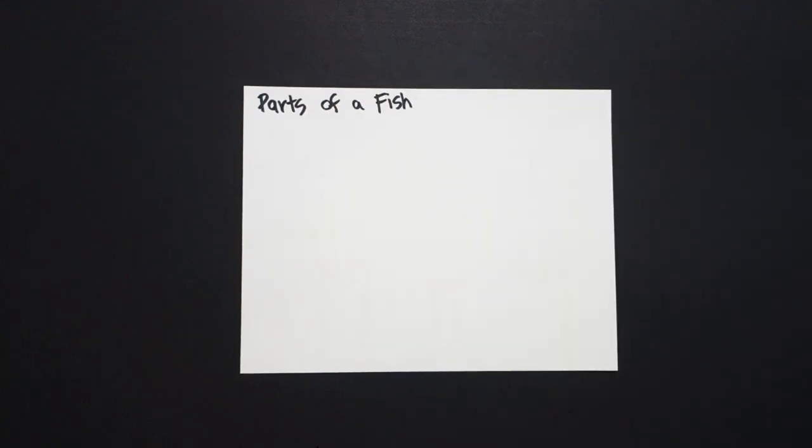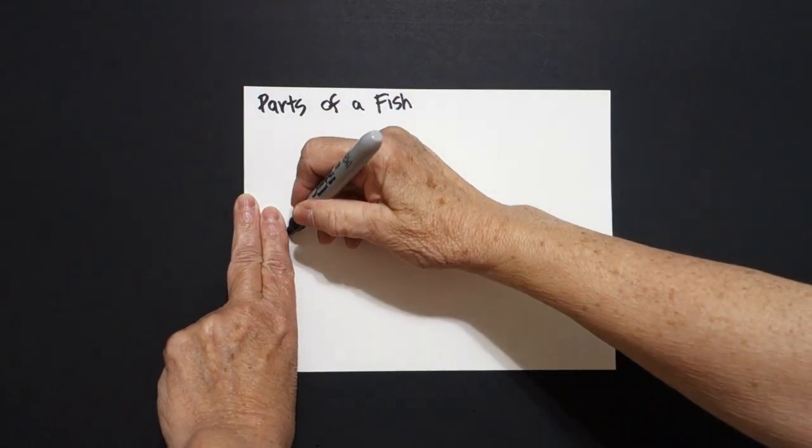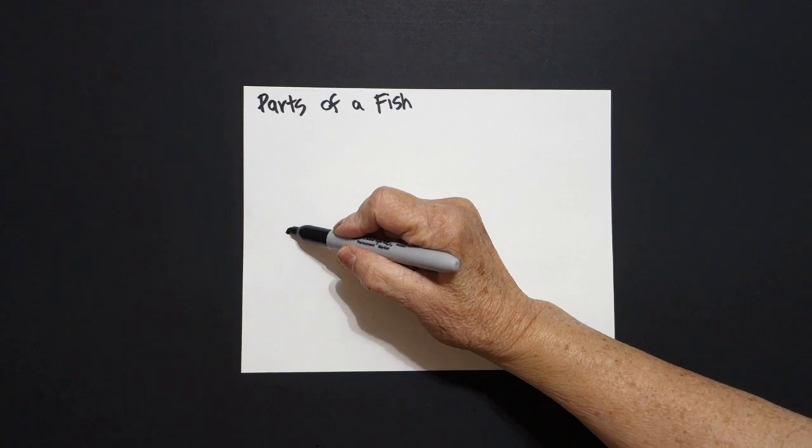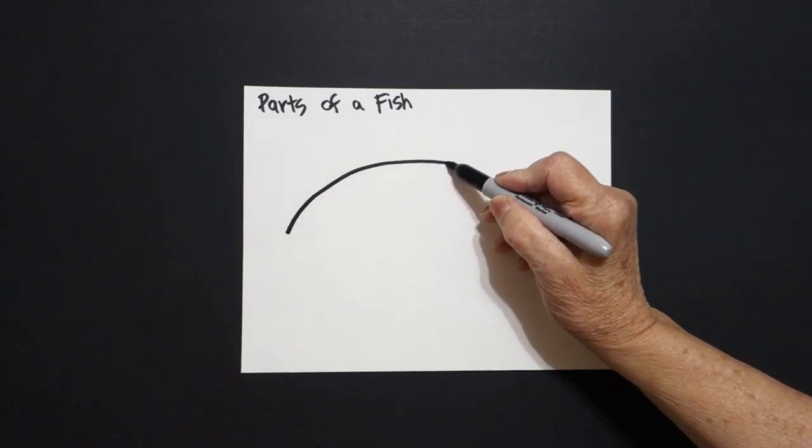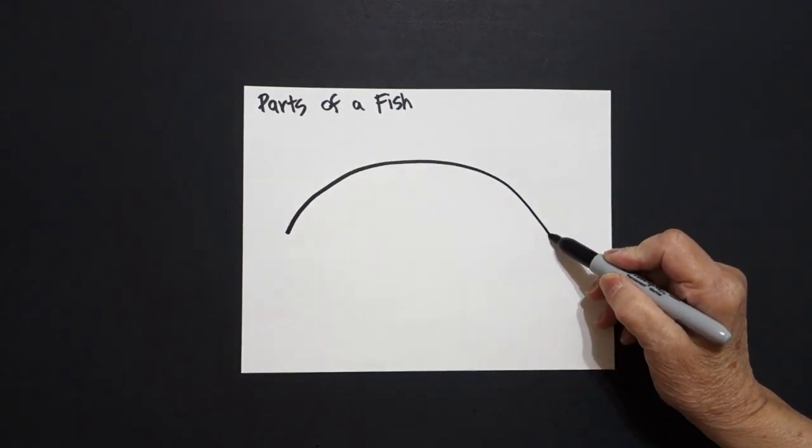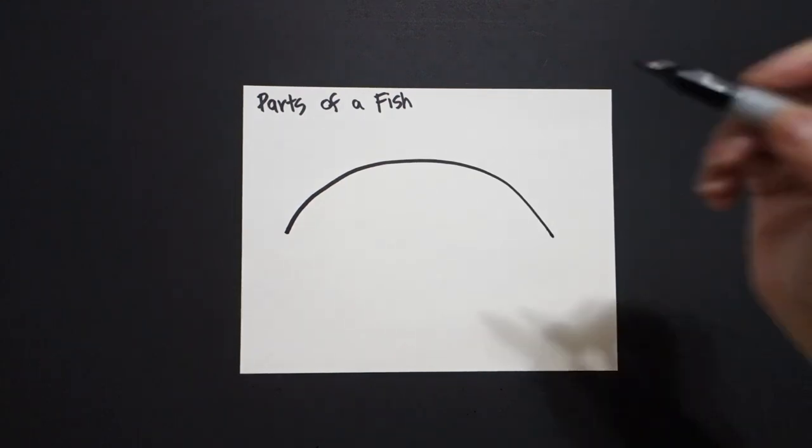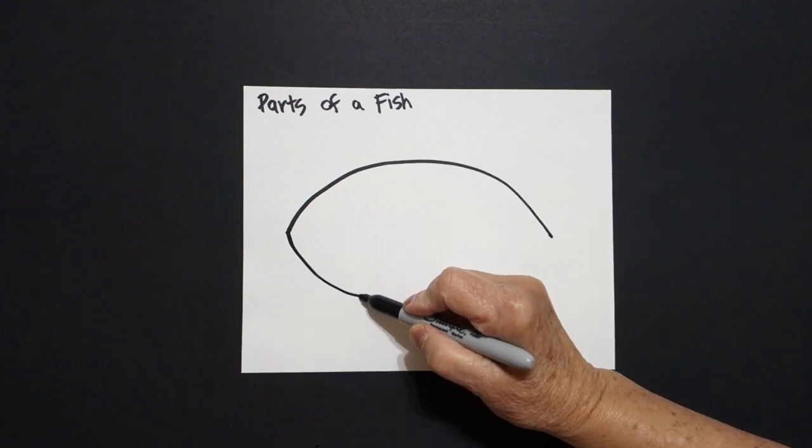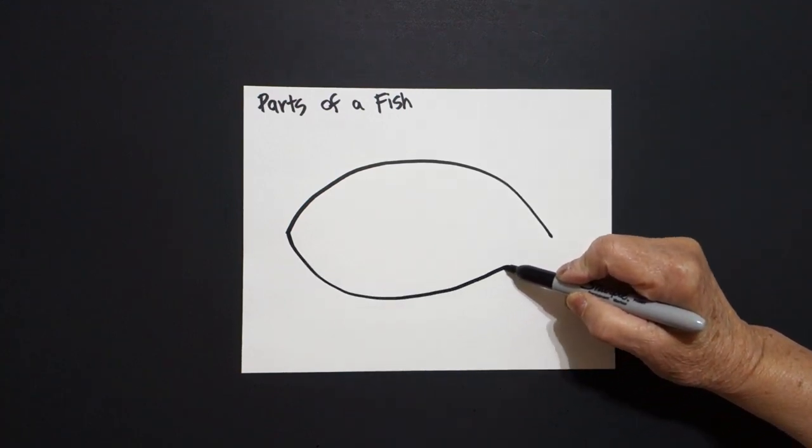I take two fingers over here on the left, right here in the center, and I put a dot. And from that dot, I draw a big curve line over towards the right and I leave it floating. I come back to my dot and I draw a big curve line under, up, and connect.